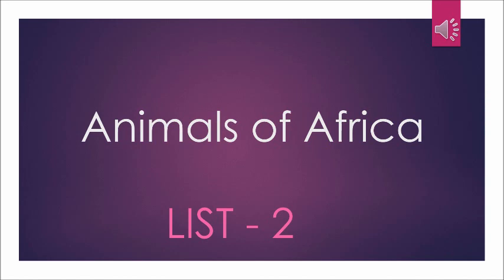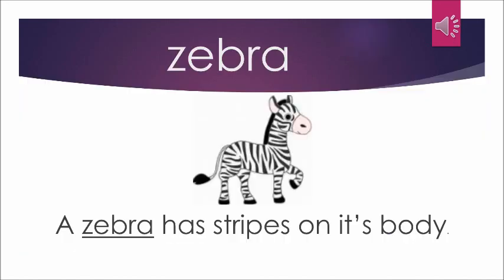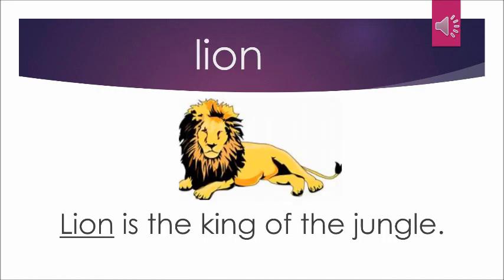Animals of Africa list 2. First word: zebra. Zebra is an animal and we know zebra has black and white stripes. It is a wild animal which loves to eat plants. So the sentence is: A zebra has stripes on its body.